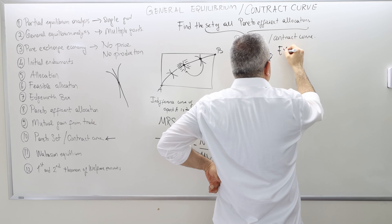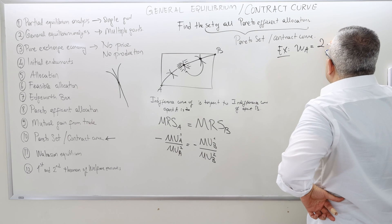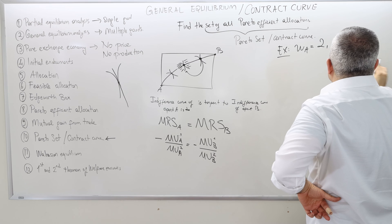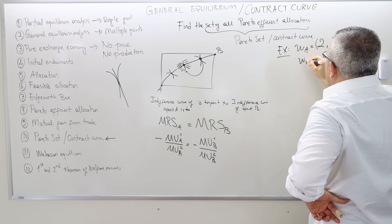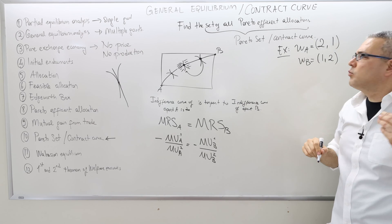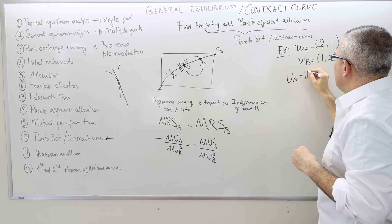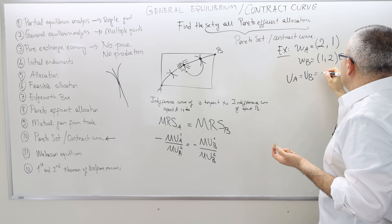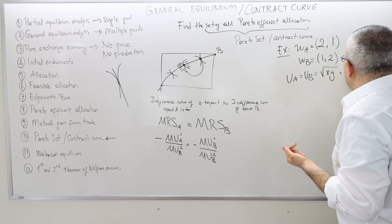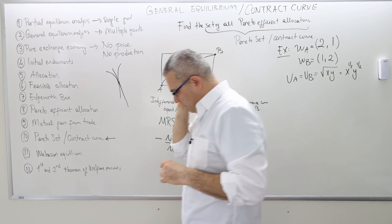Let's do an example. The initial endowment for agent A is (2, 1) and for agent B is (1, 2), so there are three units of good one and three units of good two in total. The utility function for both agents is the square root of X times Y, or X to the half times Y to the half — a standard Cobb-Douglas utility function.